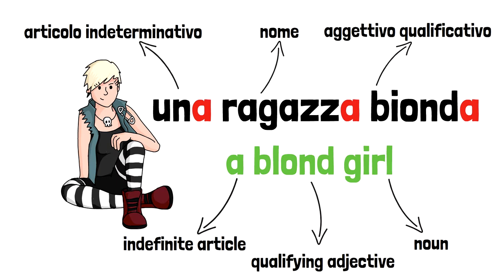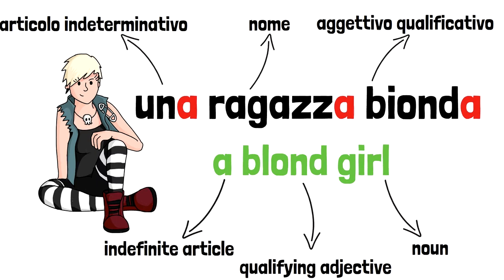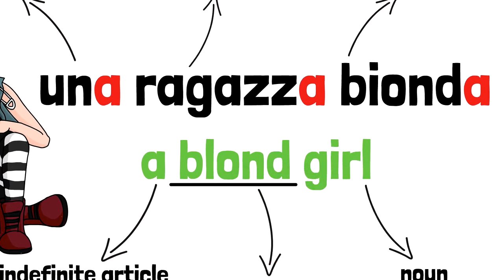Now let's point out the differences. Blonde, the adjective in English, is placed before the noun. While in Italian, in most cases, it is placed after the noun. Ragazza bionda. As you can see, bionda, the adjective, is at the very end.